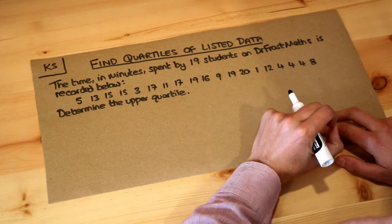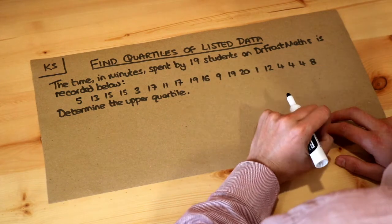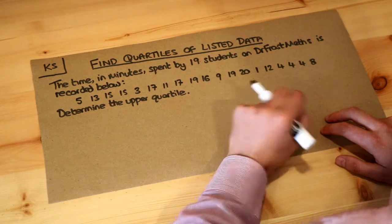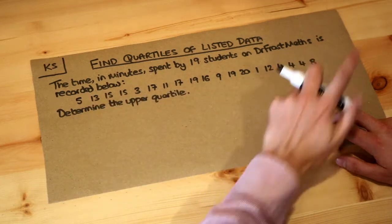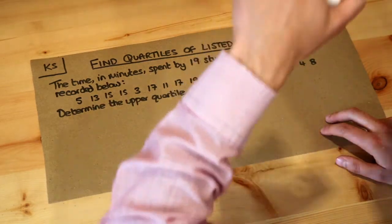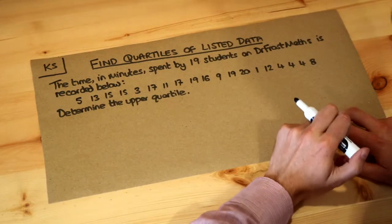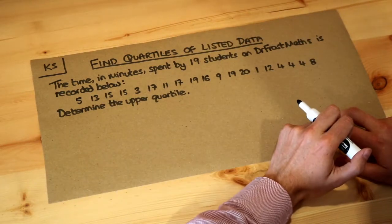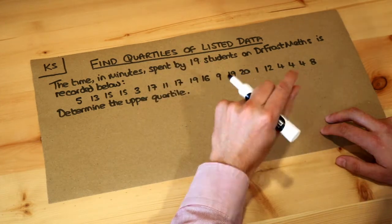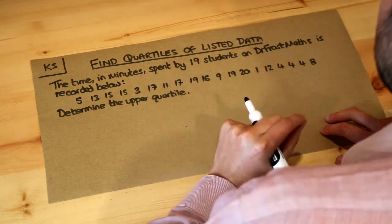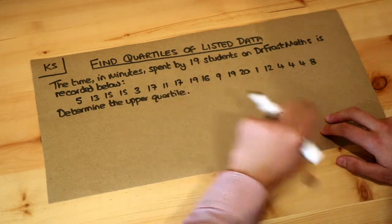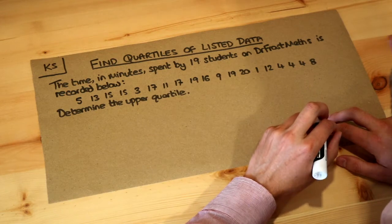Now think about how we find the median of the list. Remember, median means middle, and what you need to do first is to put all the values in ascending order and then just pick the middle one to get the median. Now with quartiles it's going to be slightly different, but we're still going to start with the same process — we're still going to put these values in order.